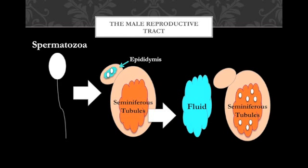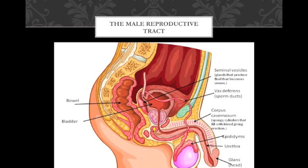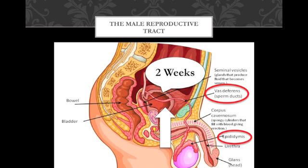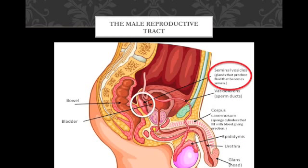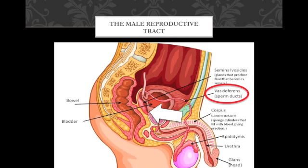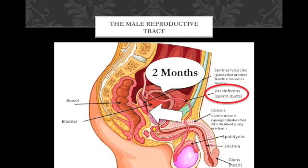Mature spermatozoa are stored. It takes the spermatozoa two weeks to travel from the epididymis and reach the ductus deferens. However, although the spermatozoa leaving the epididymis are physically mature, they remain immobile. To become mobile, they must undergo capacitation. Capacitation occurs once the spermatozoa mix with the secretions of the seminal glands and are exposed to the conditions inside the female reproductive tract. The ductus deferens propels spermatozoa and fluid along the length of the duct through peristaltic contractions and has the ability to store spermatozoa for up to a two-month duration.